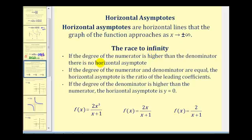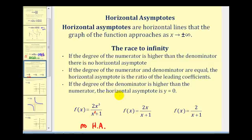If the degree of the numerator is higher than the degree of the denominator, as in this first function, there will not be a horizontal asymptote. Here the degree of the numerator is three and the degree of the denominator is one. As x approaches positive infinity, the numerator increases faster and the function value increases without bound. We can illustrate this quickly with a graphing calculator.